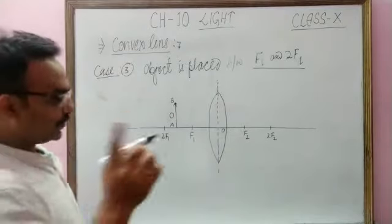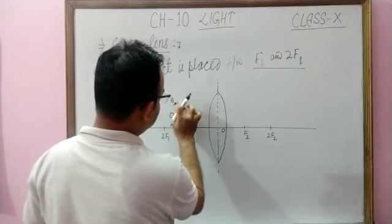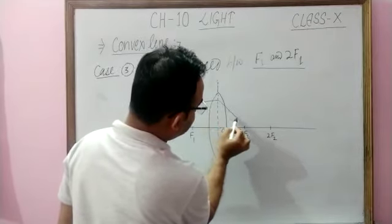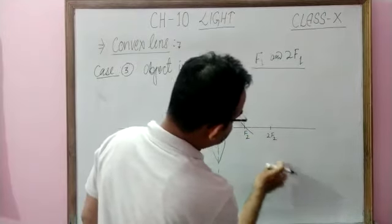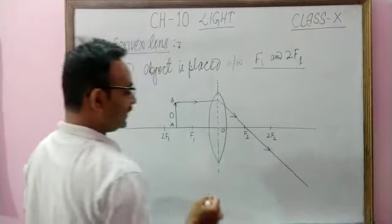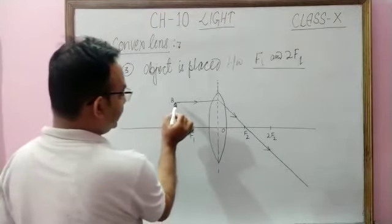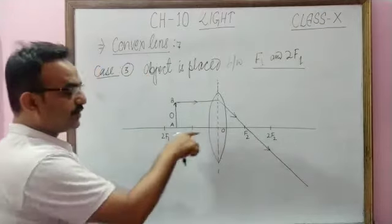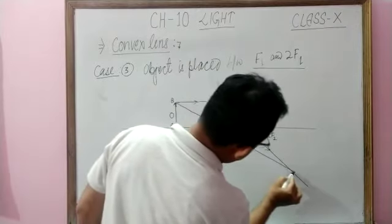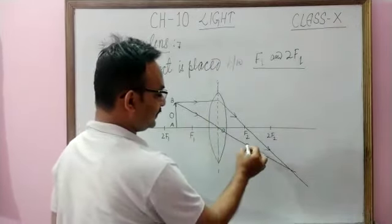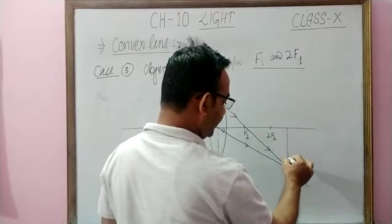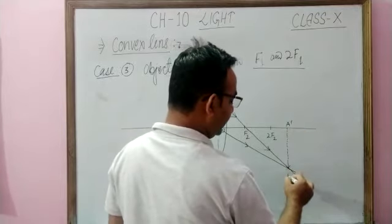As per rule 1, the incident ray parallel to the principal axis, after refraction, passes through the principal focus. As per rule 3, the incident ray passing through the optical center goes undeviated. This is the meeting point where you obtain the real and inverted image A'B'.